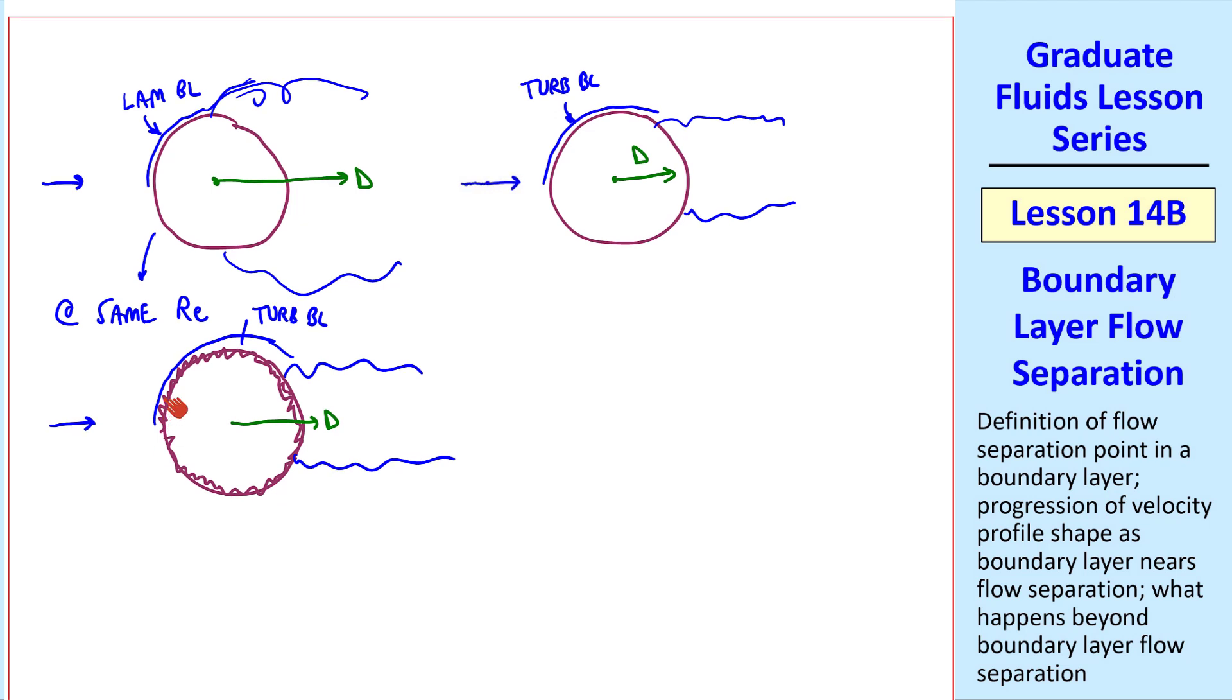The bottom line is this. We have more surface or skin friction drag on this case than on this case. But because of the delayed flow separation, we have much lower pressure drag, and the overall drag actually ends up being smaller. So dimpled golf balls can be hit farther than non-dimpled, smooth golf balls.